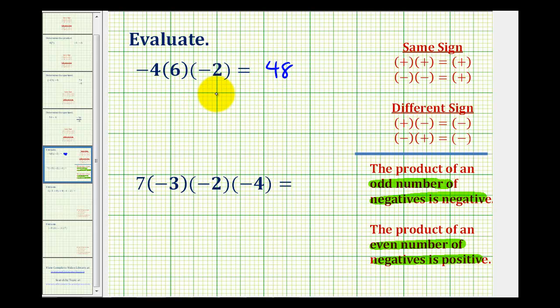Again, the other option just to verify this would be to follow the rules for multiplying two integers, and then multiply from left to right, two integers at a time. So negative 4 times positive 6 would be negative 24, and then we'd have negative 24 times negative 2, which of course would be positive 48.